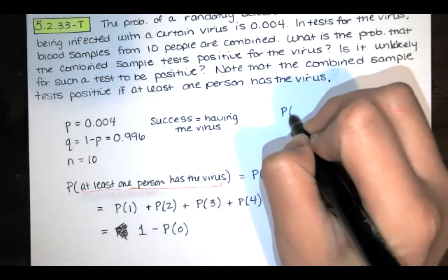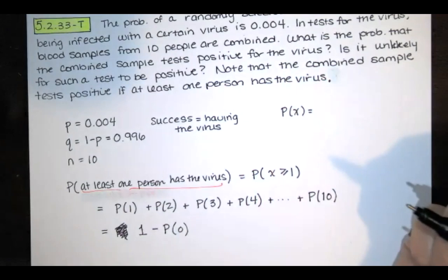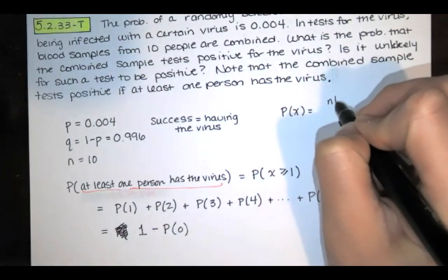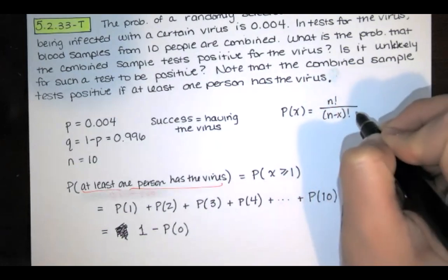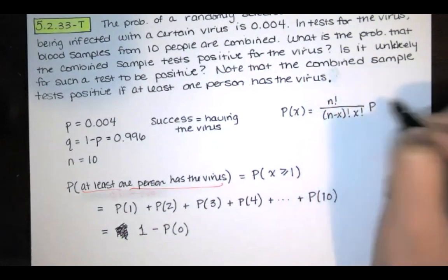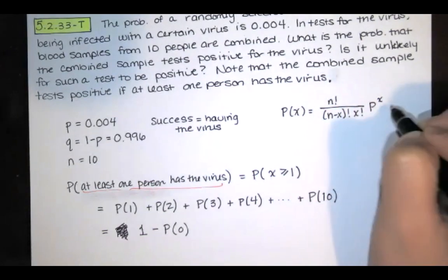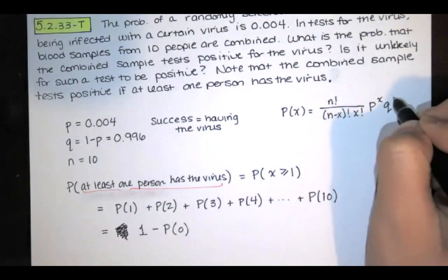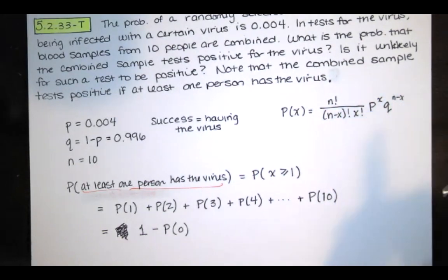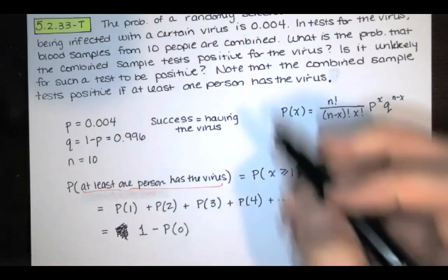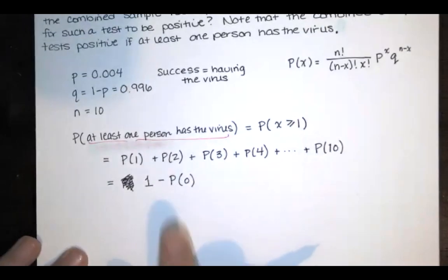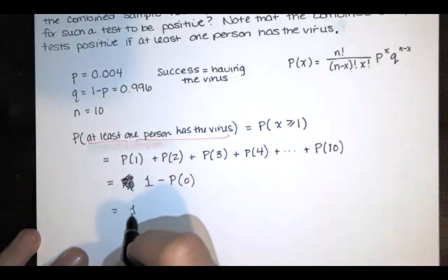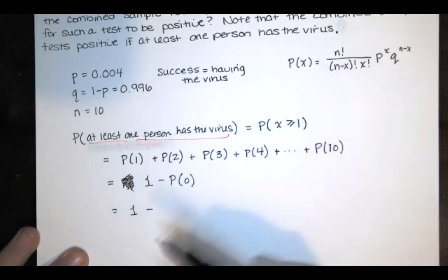The probability of X successes in N trials is given by N factorial over (N minus X) factorial times X factorial, times the probability of success raised to the X power, times the probability of failure raised to the number of failures. We'll use this formula to find the probability that X equals zero and N equals 10.